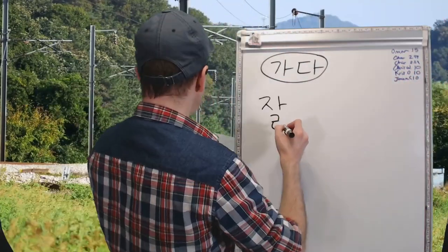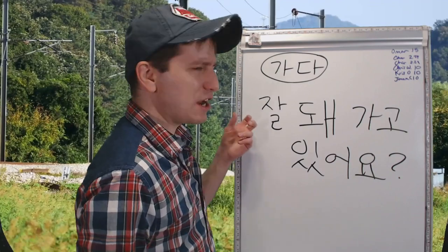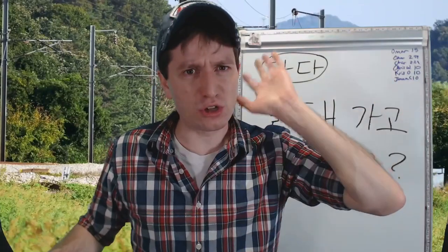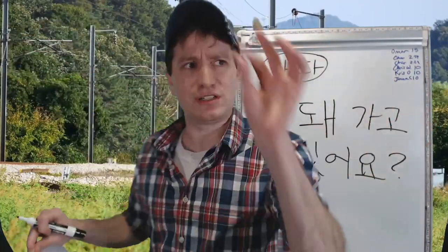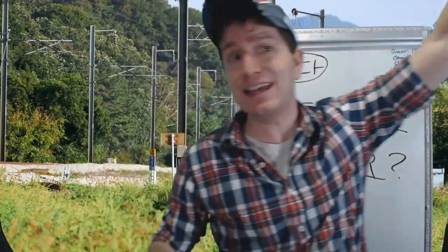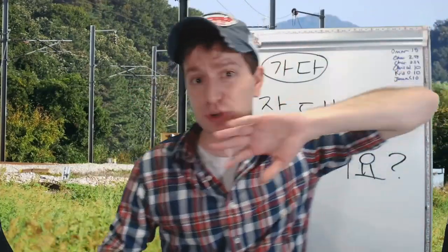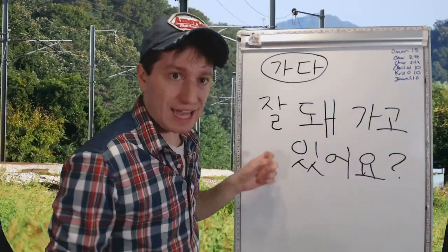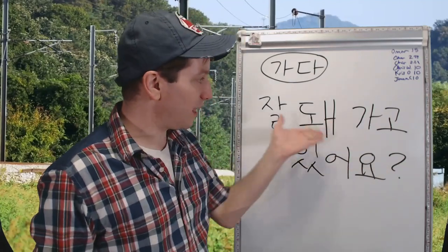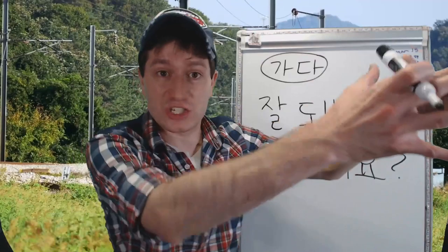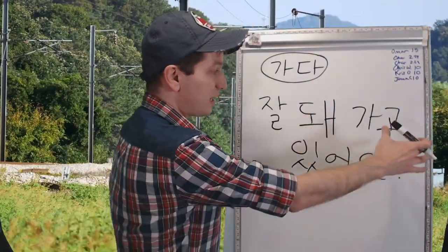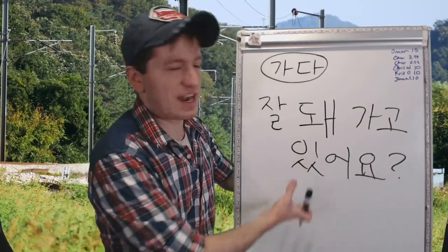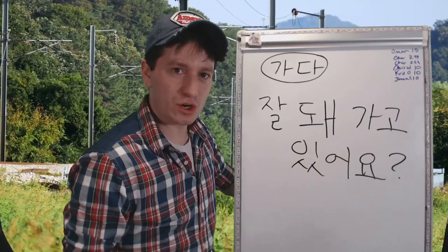You can use it with verbs like 되다. 잘 되어가고 있어요? — Is it going okay? The direction now is no longer a physical place but out into the future. Is it going okay? You predict into the future that it's still going to go okay. 잘 되어가고 있어요? — Is it going well? Whatever it is — your project, homework, studies, finding a job, learning Korean — 잘 되어가고 있어요? Is it going well?